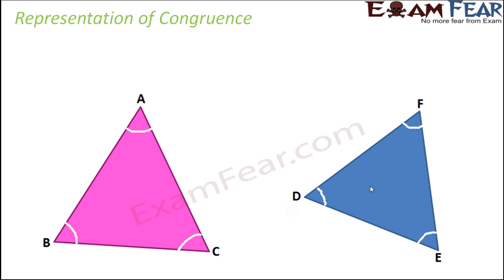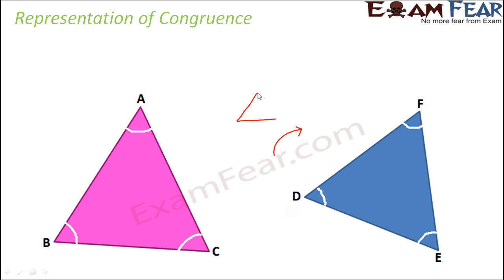Now what have we observed? We observed that in order to overlap these two triangles, if you place this triangle as it is over this triangle, do you think that they will cover each other exactly? No. In order to cover each other exactly, you need to rotate this triangle. So the moment you rotate this triangle in the clockwise direction, what happens? You bring it to the same orientation as that of this triangle. And what is that same orientation?